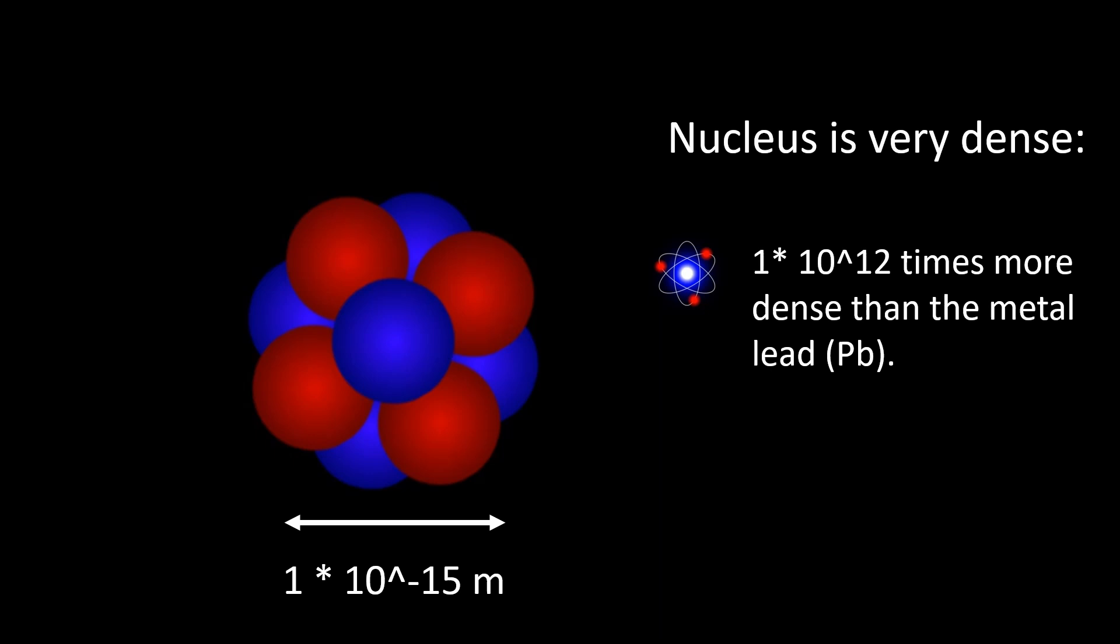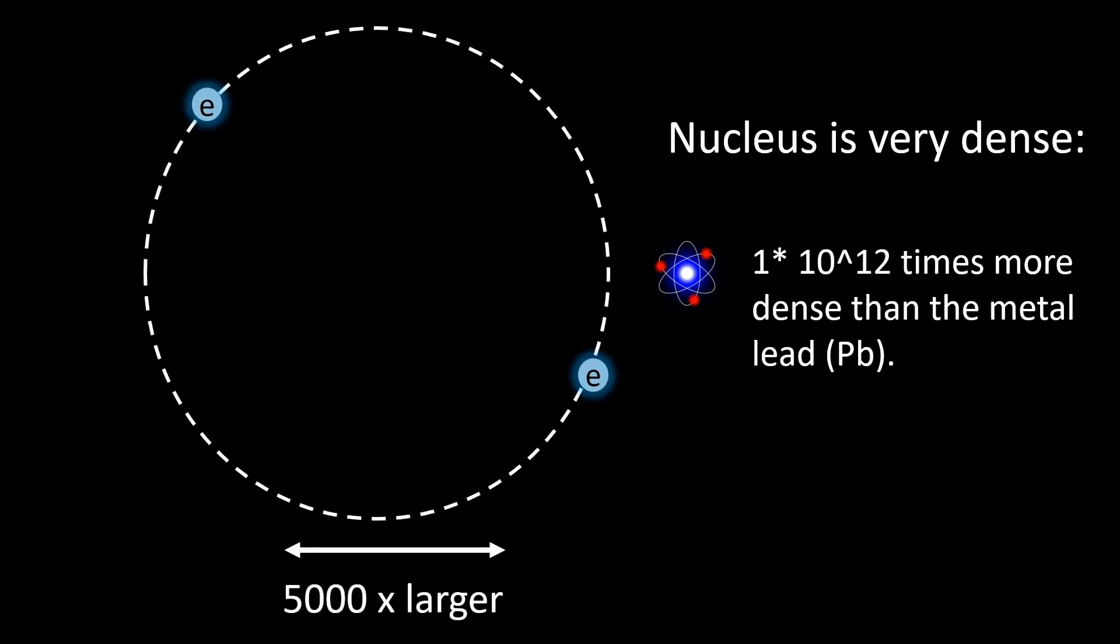For example, the radius of a nucleus is approximately 1 × 10^-15 meters, while the entire atom is approximately 5,000 times greater.